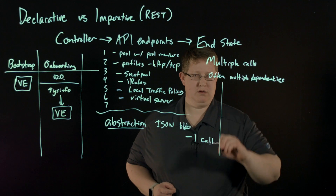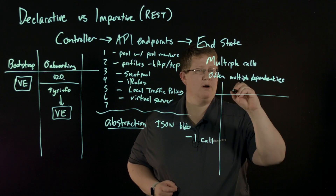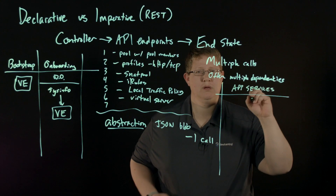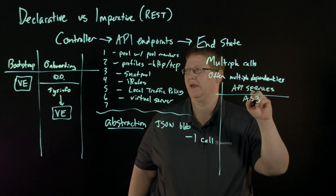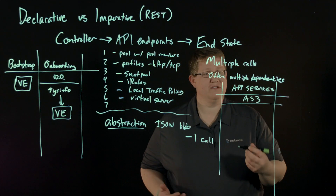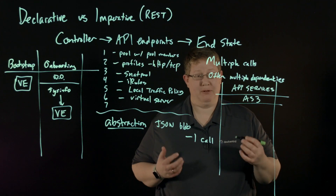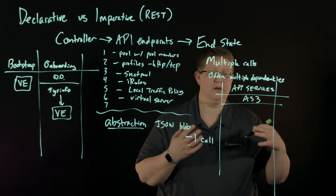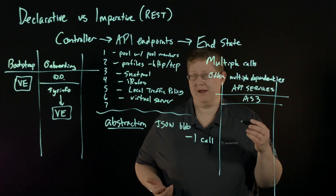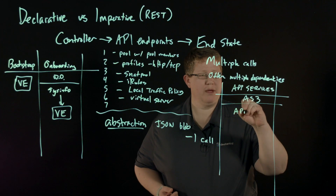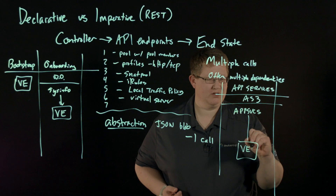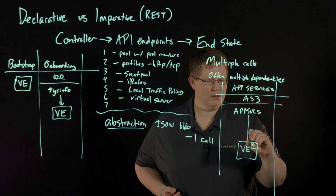Then we come over here and we have our application services — what we call AS3. Within AS3, this is where your applications are really defined: whether it's local load balancing, global load balancing, policies, iRules — all of those things are defined here. You apply your app services down to the virtual edition that has already been built with DO.